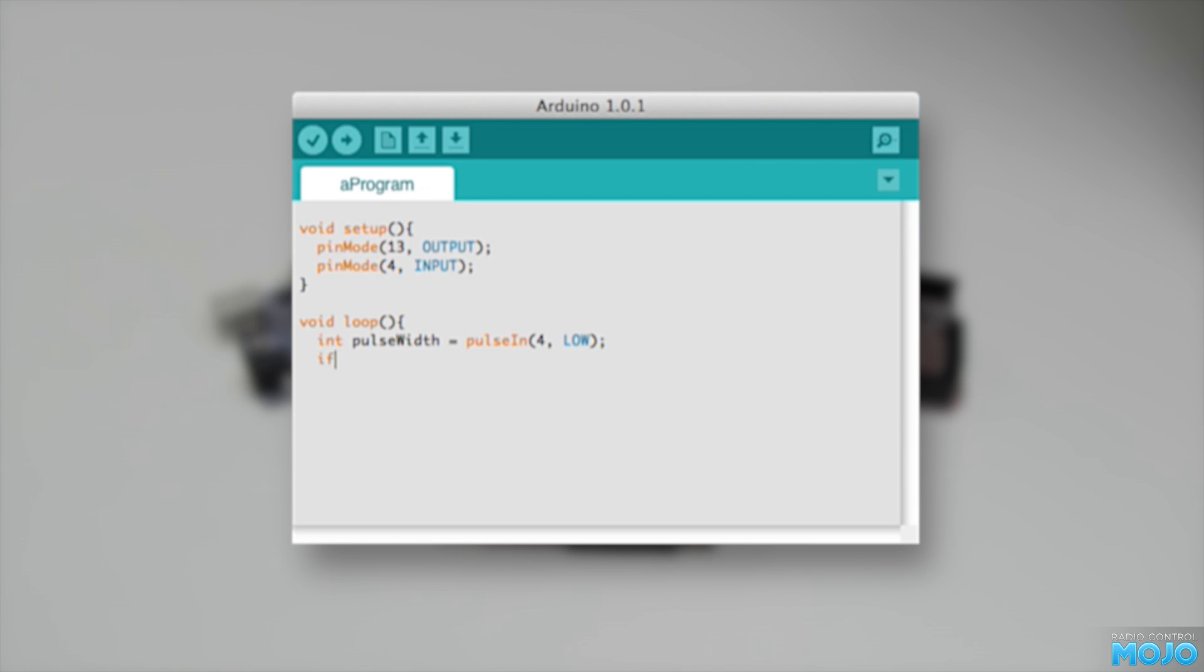Next we make sure pulse width is greater than zero, which makes sure there actually was a pulse.